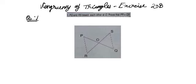Hello friends, welcome back to my YouTube channel. In this video, we are going to solve ICSC Mathematics Class 7 Chapter 20, Congruency of Triangles, Exercise 20B. And this is question number 1.